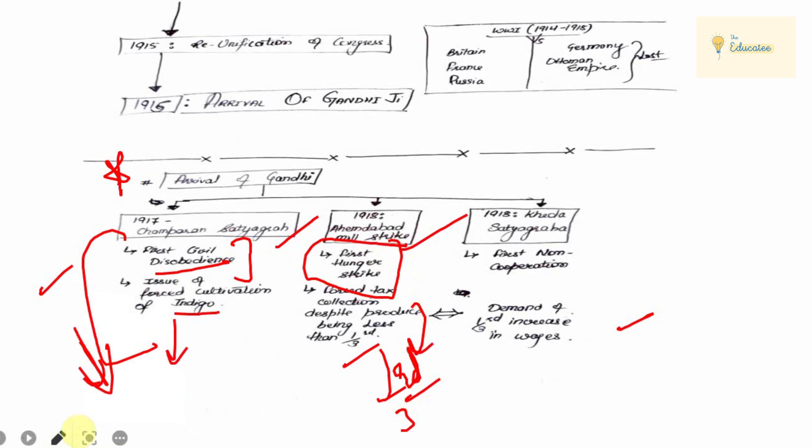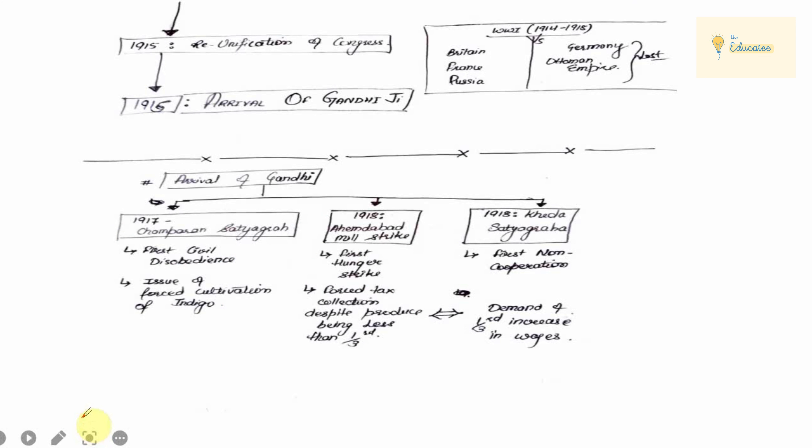And after that, you know that Gandhi Ji has made a lot of hunger strikes in multiple events. There were significant results in 1918. In Kheda, what was the case?